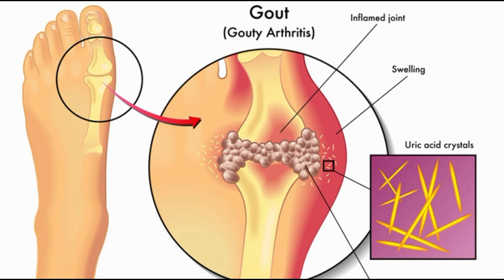Research now shows that purines in plant foods are not associated with the increase of gout. Purines in plant foods aren't associated with gout because plant foods are packaged with minerals, dietary fiber, and phytonutrients that protect against uric acid buildup.